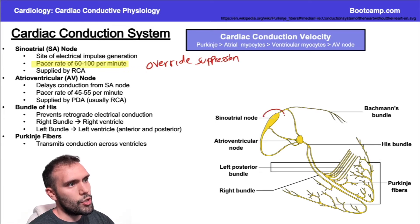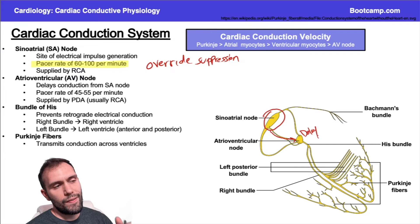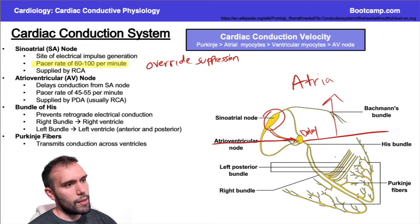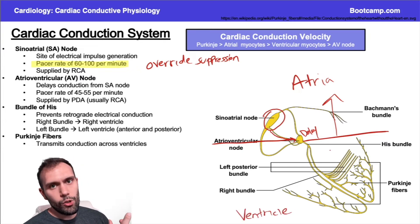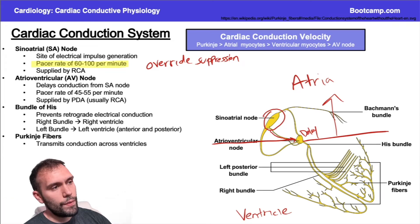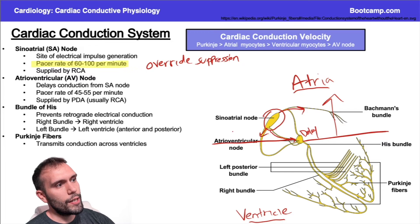The impulse originates at the sinoatrial node and goes down to the AV node — the atrioventricular node — where there's usually some kind of delay. Everything above this line is atria; everything below is ventricle. The atria contract during diastole — particularly at the end of diastole you have an atrial kick — while ventricular contractions occur in systole. You don't want everybody contracting at the same time; you want the atria to contract first, then the ventricles.